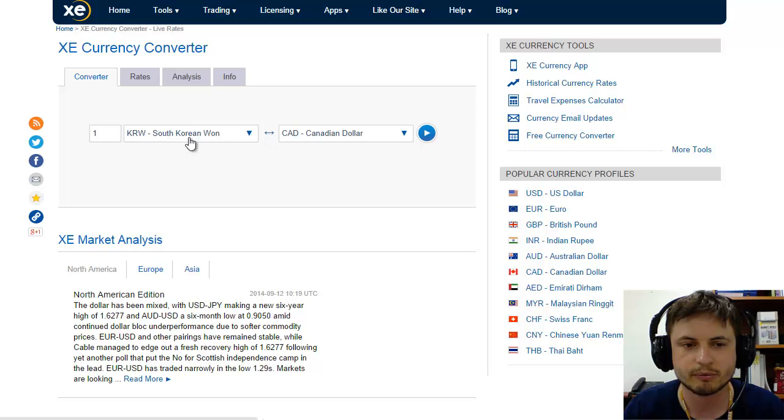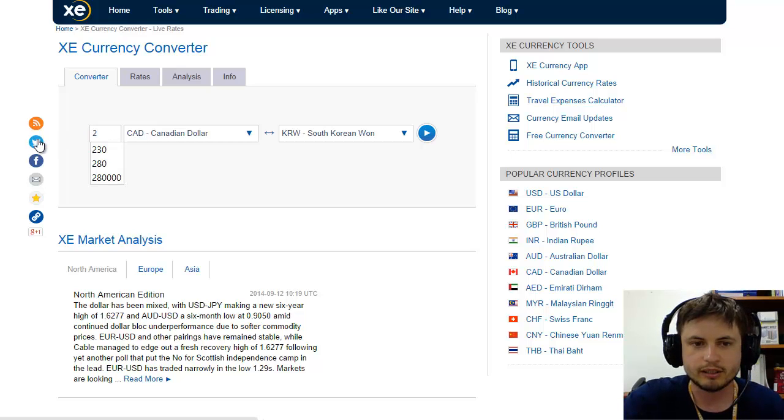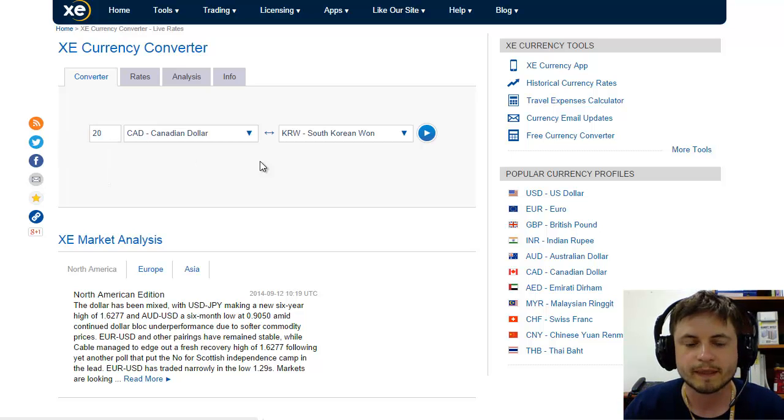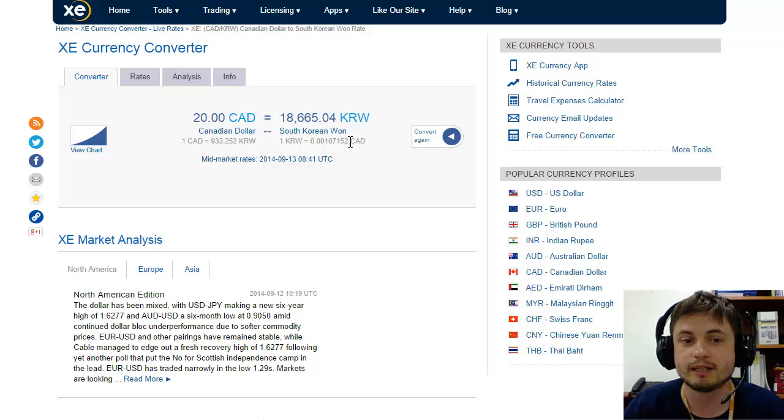Right here we have Korean, South Korean won, and Canadian dollars. I'm going to convert my twenty Canadian dollars into Korean won. So I paid twenty Canadian dollars and how many Korean won was that? Unfortunately for me, it was eighteen thousand six hundred sixty five Korean won, which means that I actually lost eight thousand six hundred sixty five won because what I paid was a lot more than ten thousand won that I had to pay.